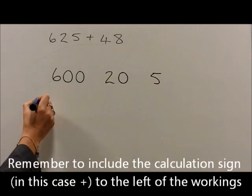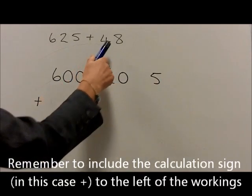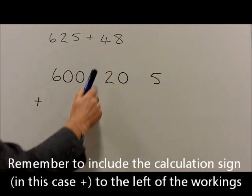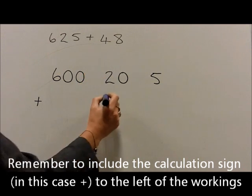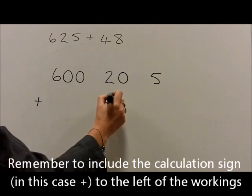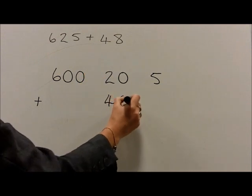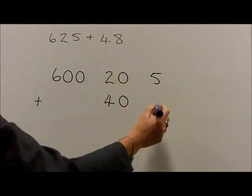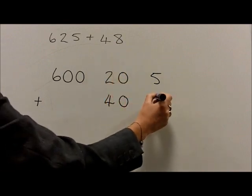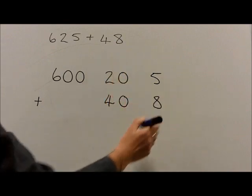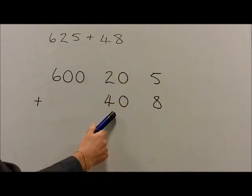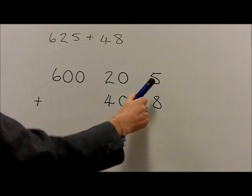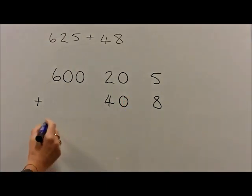This is then added to the 48, which partitions into 4 10s, which are 40, and 8 units, which are 8. Notice the 10s is kept under the 10s, and the units is kept under the units.